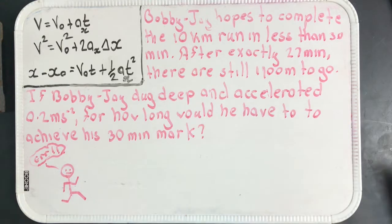So without further ado, let the games begin. Bobby J hopes to complete the 10 kilometer run in less than 30 minutes. After exactly 27 minutes there are still 1100 meters to go. If Bobby J dug deep and accelerated 0.2 meters per second squared, for how long would he have to accelerate at this acceleration to achieve his 30-minute mark?